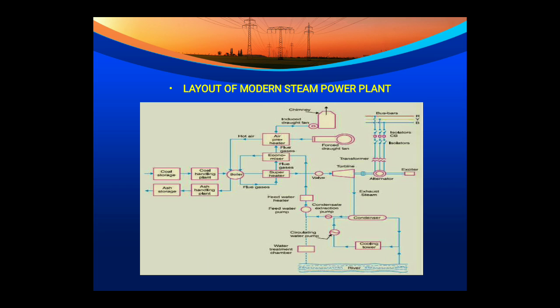After ignition in the boiler furnace, flue gas is produced. This heated flue gas is supplied to the superheater, then to the economizer, then to the air preheater, and is finally exhausted through the chimney to the outer atmosphere. The flue gas heats the steel tubular plates in the superheater, economizer, and air preheater by heat transfer and radiation.